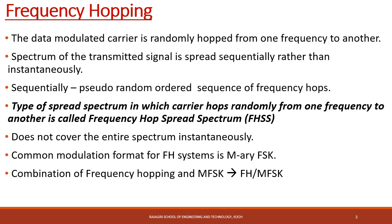In Frequency Hopping Spread Spectrum, it will not cover the entire spectrum at one instant. It will be spread across the spectrum in a sequential manner. The commonly used modulation technique in FHSS is M-ary FSK (MFSK), that is M-ary Frequency Shift Keying. Therefore, the combination of frequency hopping and MFSK is called FH/MFSK.